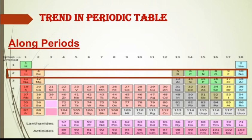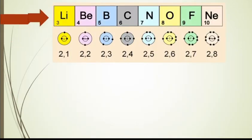Suppose second period है। इसमें lithium है - यह complete second period की elements हैं। इसमें से जो first element है Li lithium, यह group 1 में आता है। Next element है Be beryllium, यह group number 2 का element है। Center में 10 positions हैं, यहाँ पे center में कोई elements नहीं होते। Group number 13 का element है B boron, वो भी second period में आता है। Group number 14 का element है carbon। Next nitrogen, oxygen, fluorine, and neon - यह सब different groups के हैं लेकिन period इनका same है, second period।